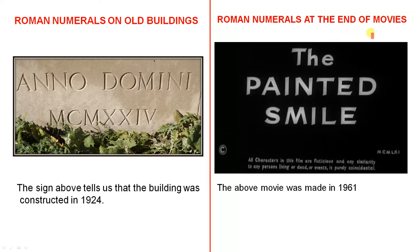You'll also see Roman numerals at the end of movies. Not all movies, but a lot of movies have Roman numerals at the end where they tell you when the movie was made. So the above movie was made in 1961. Have a look at that carefully. Pause the slide and see that it is actually 1961.